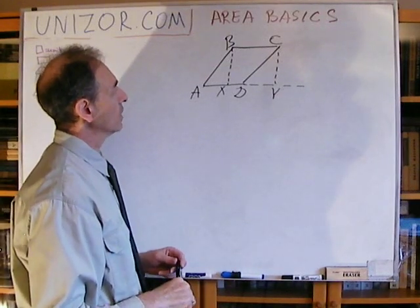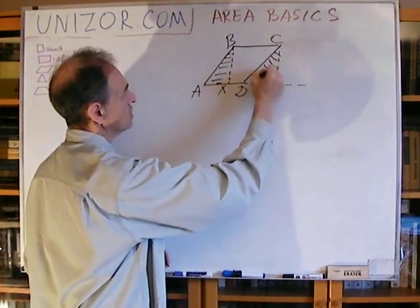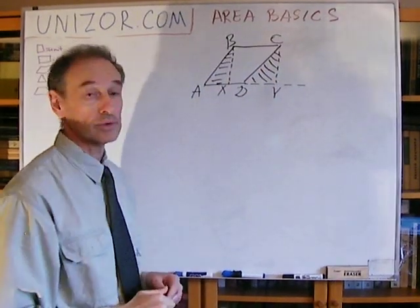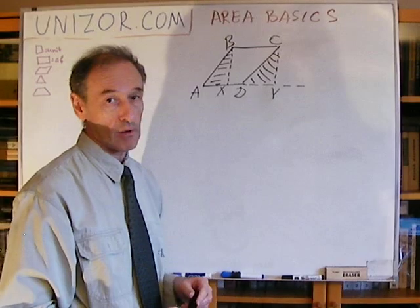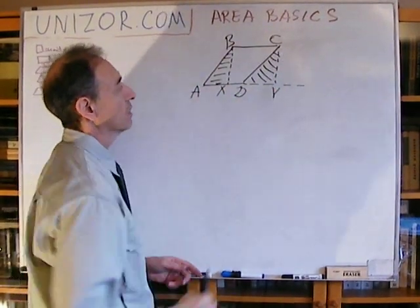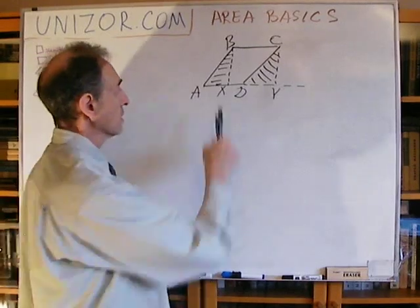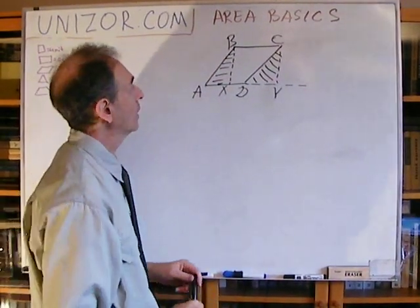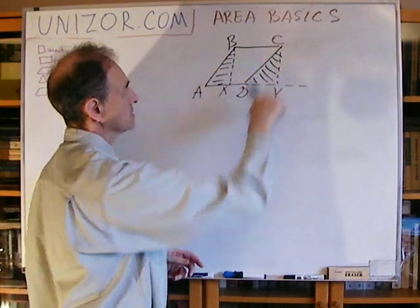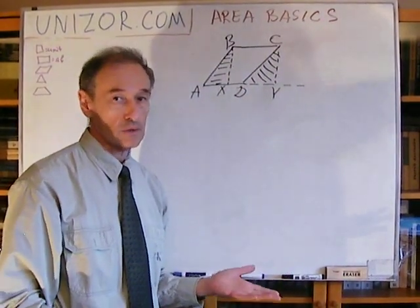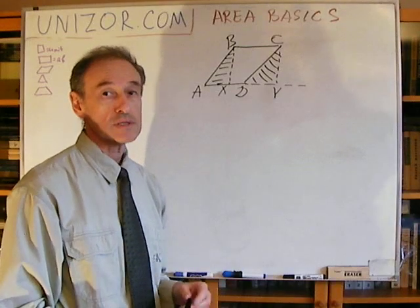What's important right now is to notice that these two triangles — ABX and DCY — are congruent. First of all, these are perpendiculars, which means that both triangles are right triangles. They have the same leg, which is basically the distance between two parallel lines — this distance is always the same wherever you measure it. And they also have congruent hypotenuses AB and CD, because they are sides of the parallelogram. So therefore we can say that the triangles are congruent and their areas are the same.